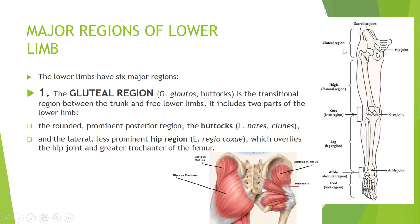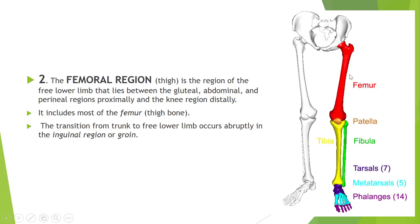Looking at this diagram, the gluteal region shows the greater trochanter of the femur and the hip bone forming the lateral part, while the most posterior and most prominent part is called the buttocks.